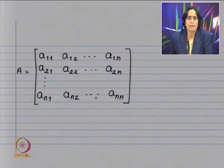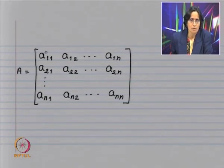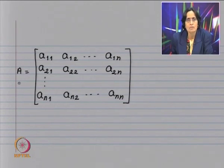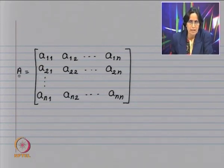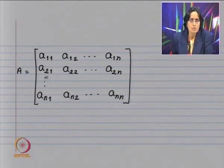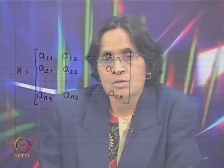Now we look at our n by n invertible matrix. We are going to first look at the first column: a_{11}, a_{21}, ..., a_{n1}. This column is non-zero because A is invertible. What we want to do is reduce A to upper triangular form — that means introduce zeros in the first column below the diagonal using a reflector. We want to convert the first column into a vector which has only the first entry non-zero and all other entries zero.